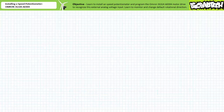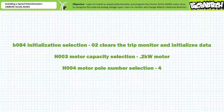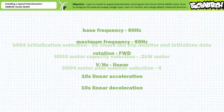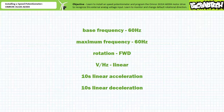Before making use of the OMRON 3G 3JX AE004 motor drive, we'll initialize the drive to a default state and clear any errors using the initialization and protection parameter B084. Then we'll program it to recognize a 200-watt, 100-watt motor with a nominal rotational speed of 1800 RPM using the motor settings parameters H003 and H004. This start state establishes a 60 Hz base frequency, a 60 Hz maximum frequency for default rotation, a linear volts-per-hertz ratio, a 10-second linear acceleration time, and a 10-second linear deceleration time, among other properties. This motor drive is now ready for today's activities.